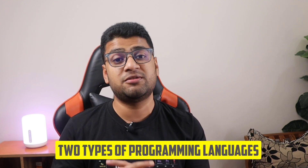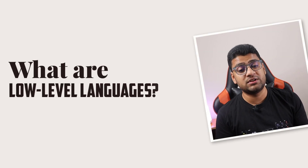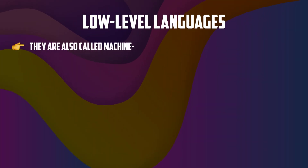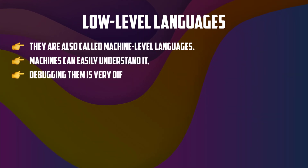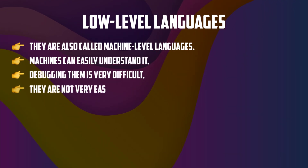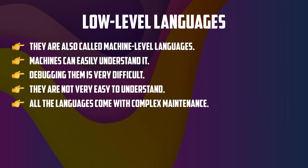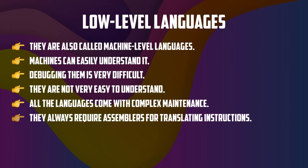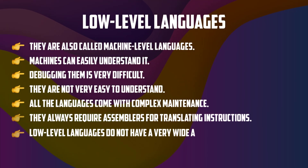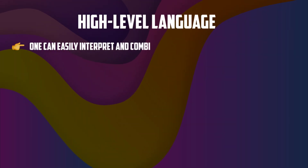On the basis of level of abstraction, there are two types of programming language: low-level language and high-level language. Low-level languages are also called machine-level languages. Machines can easily understand them, but debugging is very difficult. They are not easy to understand and come with complex maintenance. They always require an assembler for translating instructions, and low-level languages do not have a very wide application in today's time.